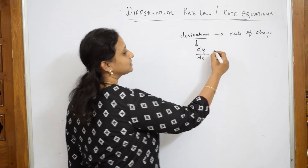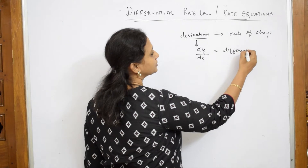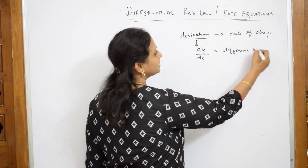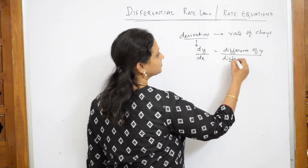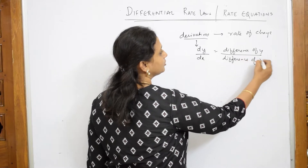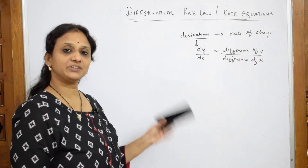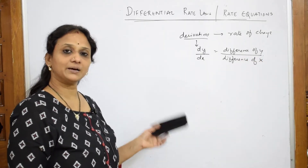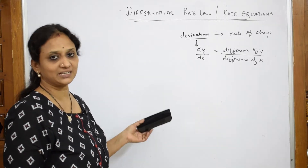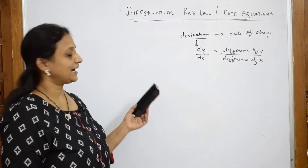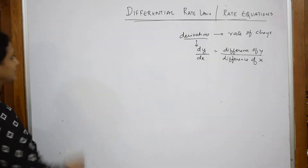So, what is this? Difference of y by difference of x. Now, I am going to use this derivative form and apply it to the chemical reactions which we are going to do in kinetics and write the differential rate equations.